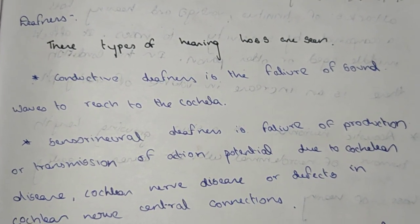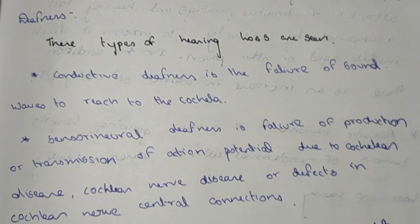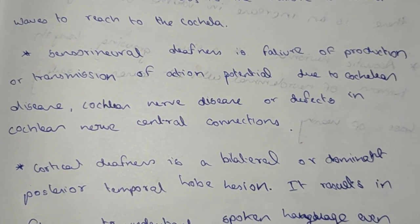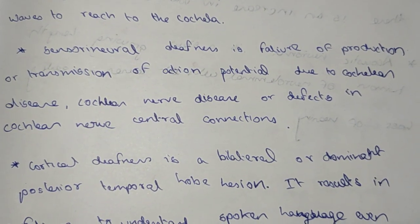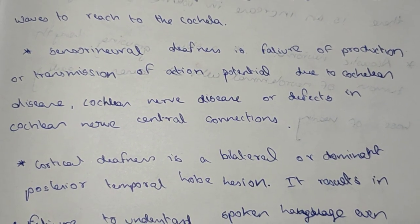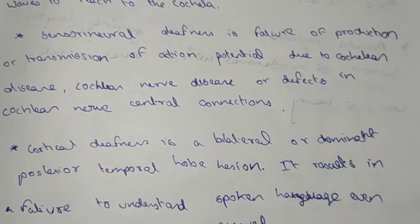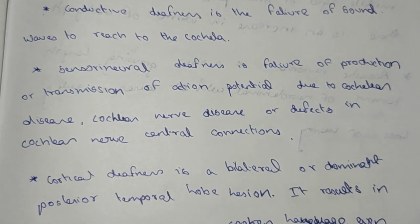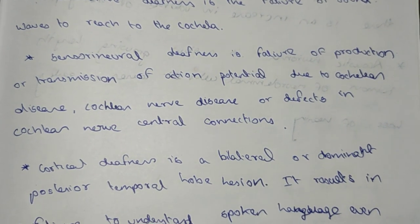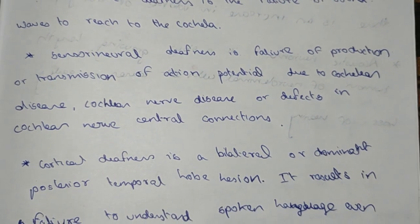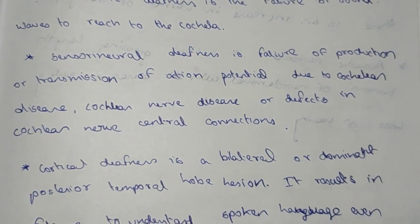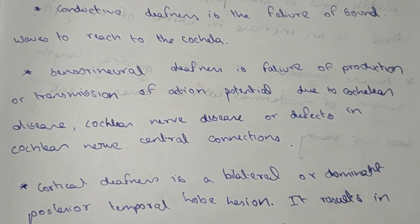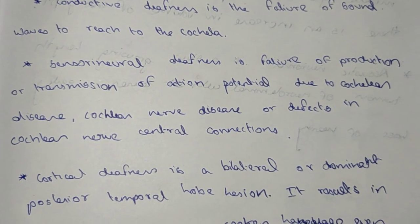The second type is sensorineural deafness — this is the failure of transmission of the action potential due to cochlear disease. When there is a problem in the cochlea, it leads to failure of production of the action potential, which may lead to deafness. Cochlear nerve disease is caused due to a defect in the cochlear nerve.